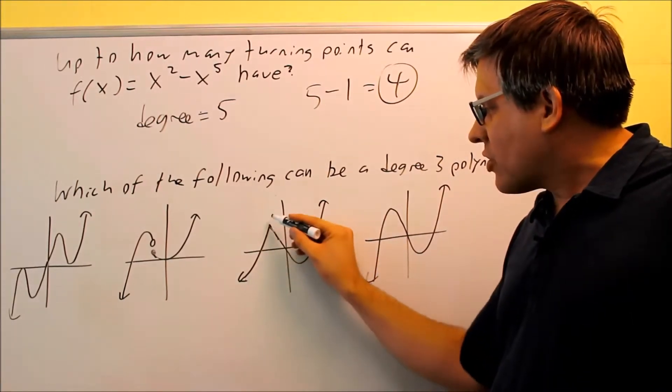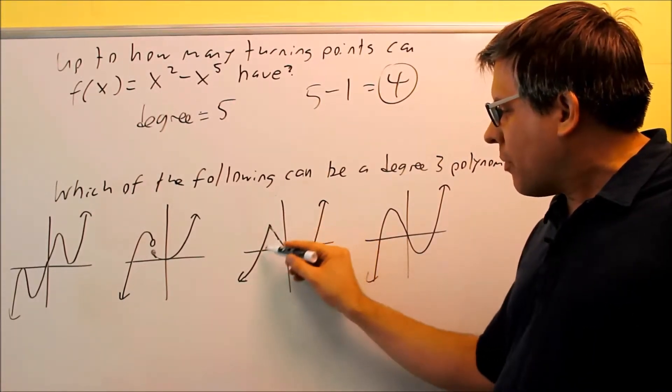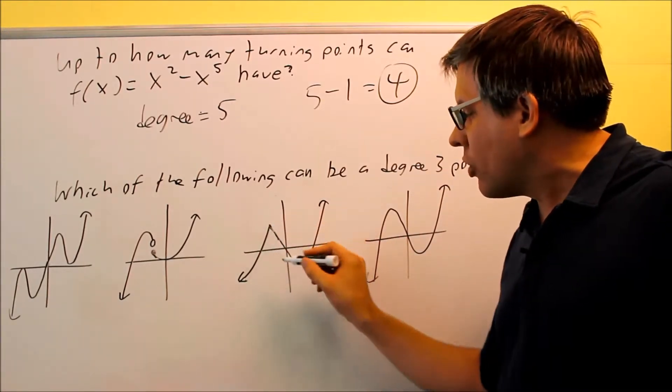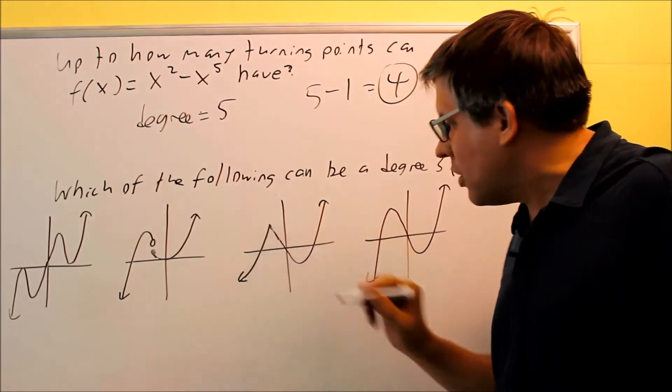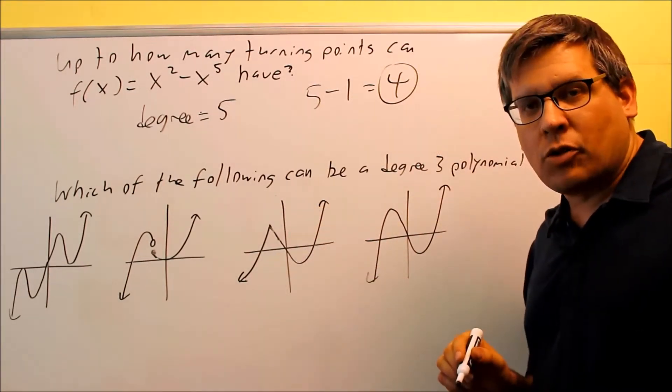This one has a crease in it. We have a corner or like a peak that it comes up to. So because it has that corner, that corner right there, that's called a cusp. So if it has a cusp in it, that's not considered a polynomial either.